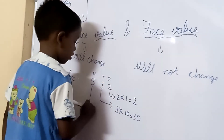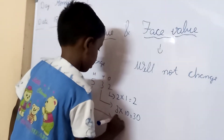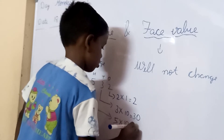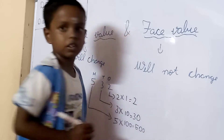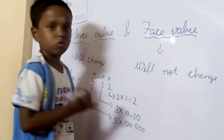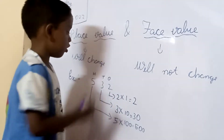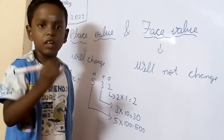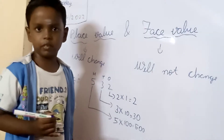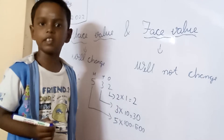Now, 5. 5 is in which place? The 100th place. So, we should multiply 5 with 100, which is equal to 500. Place value of 2 is 2. Place value of 3 is 30. Place value of 5 is 500.